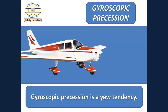Gyroscopic precession is a yaw tendency, but only operates when the airplane is changing its pitch attitude. When we are maintaining a constant pitch attitude, regardless of what it is, gyroscopic precession does not operate. A characteristic of a gyroscope — and that's what our spinning propeller becomes — is that when a force is applied to the disc, it will react as if the force was applied in the same direction, but 90 degrees through the plane of rotation.